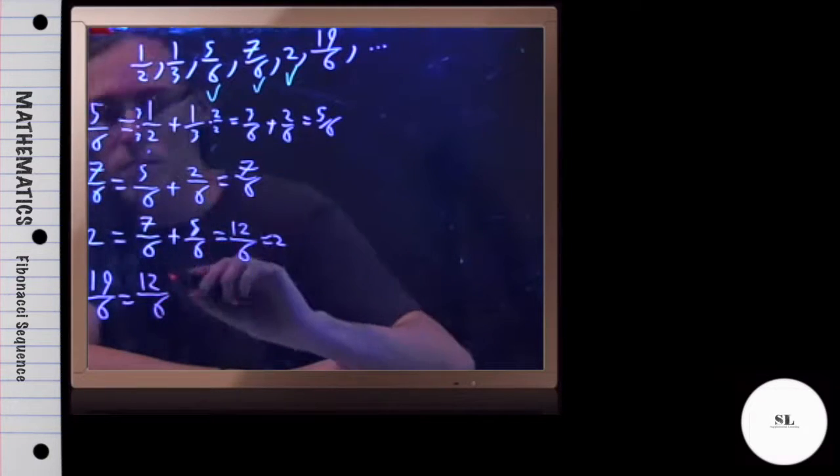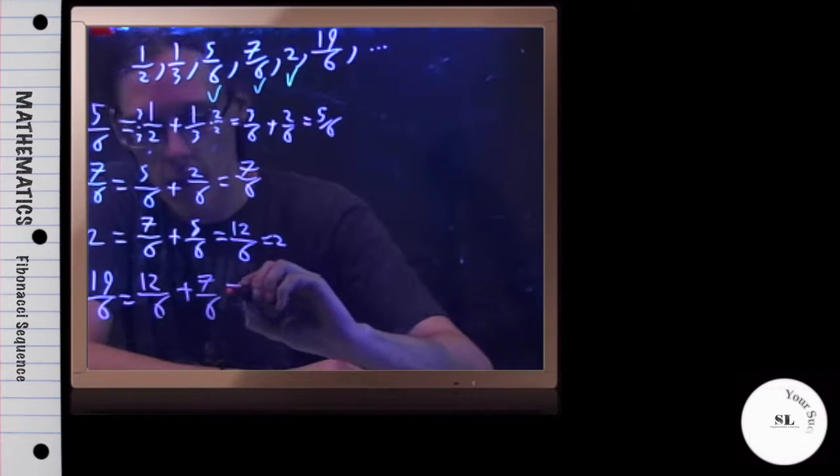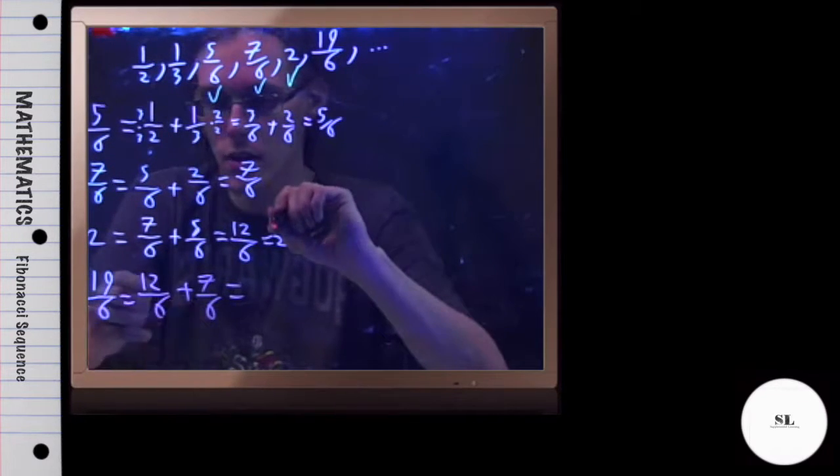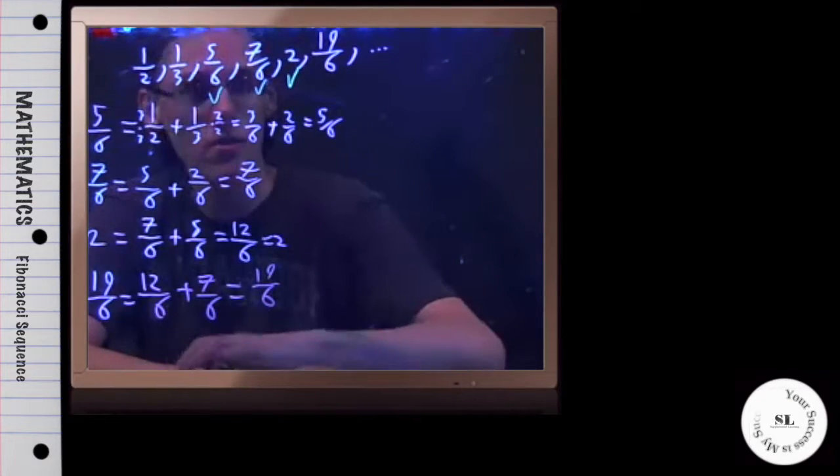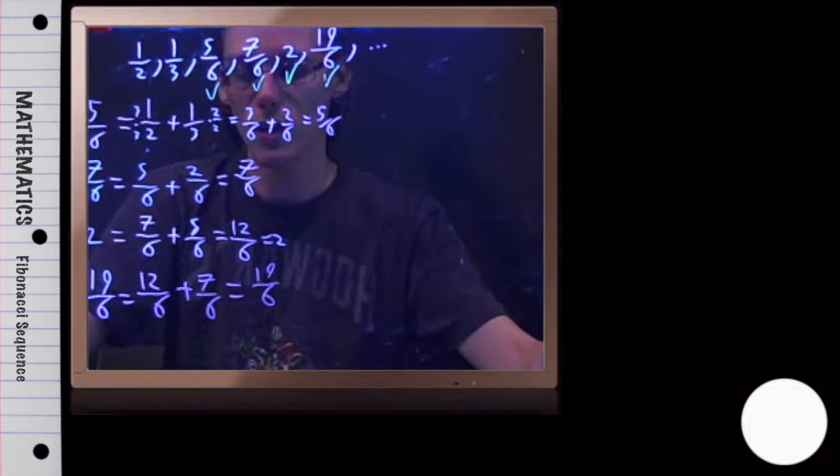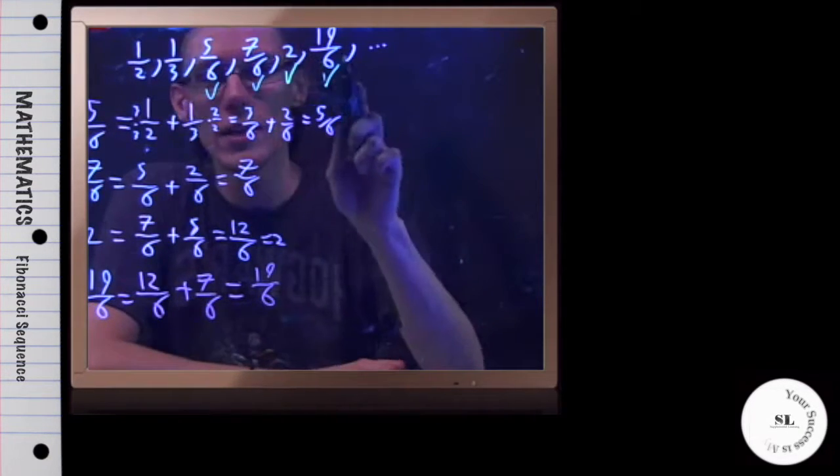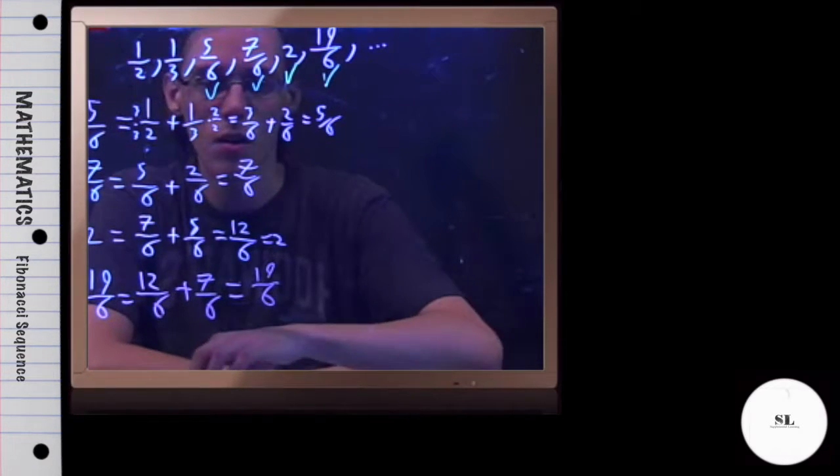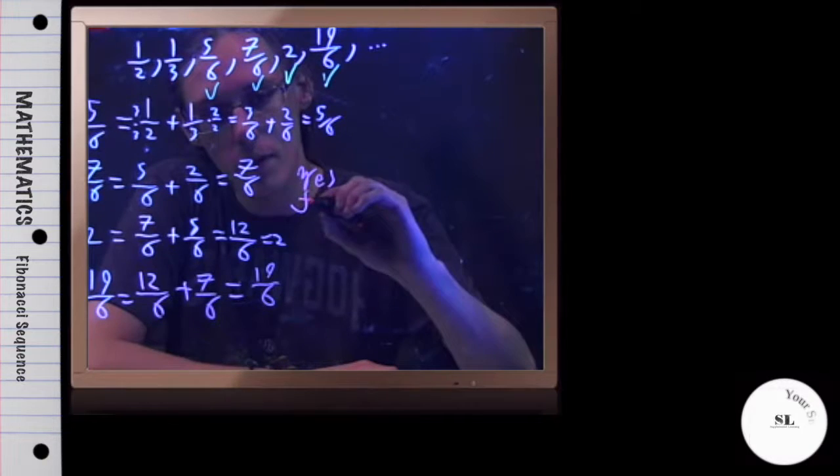2 plus 7 over 6. And as long as the denominators match, I'm just going to add straight across. So 12 plus 7. That is indeed 19 over 6. So all the way through, it's obeying the rule. It's doing the Fibonacci sequence or the Fibonacci type sequence where each term is the sum of the previous two terms. So yes, this is a Fibonacci type.